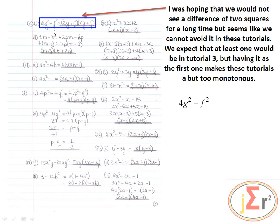Counting through the problems: one, two, three, four, five, six, seven — we have seven difference of two squares problems in these tutorials. So it would not be a strange thing that the first problem is a difference of two squares. Let us go straight ahead.